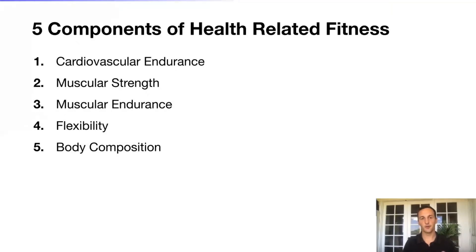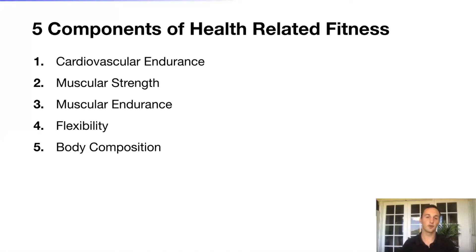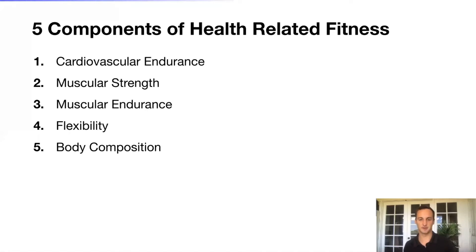That really defines the five components of health-related fitness. In most fitness settings, individuals want one of three things: to lose weight by decreasing body fat percentage, to gain muscle mass, or to improve performance in some sport or activity. If you consider the five components of health-related fitness — cardiovascular endurance, muscular strength, muscular endurance, flexibility, and body composition — these are the most important variables to measure from a health standpoint.